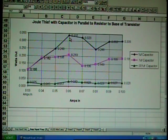So my 1 microfarad capacitor in parallel with the resistor going to the base of the transistor is my best choice for getting an LED light to be as bright as possible with as little input power as possible.